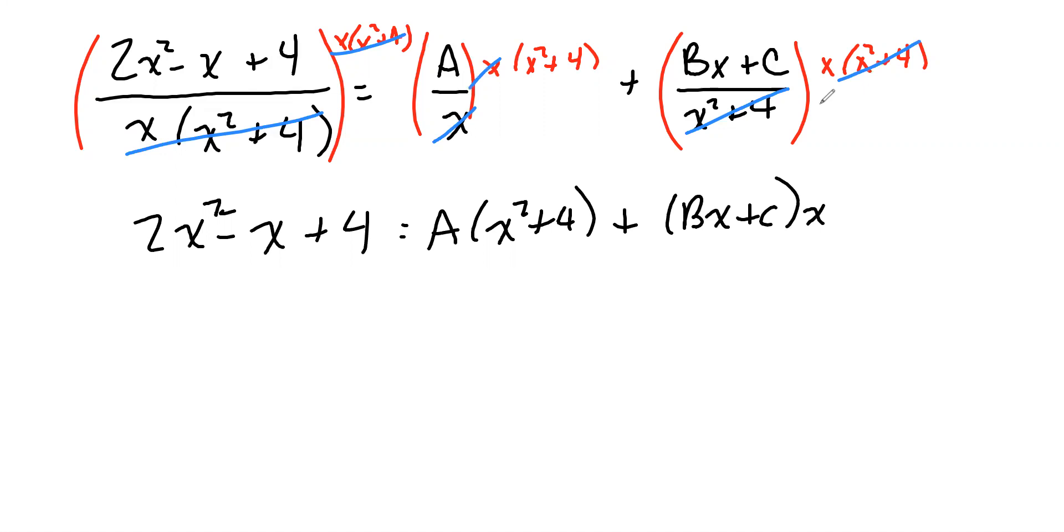Let's play the pick numbers to put in for x game. Now, the problem here is we have three constants that we don't know, a, b, and c. And we only have two factors.